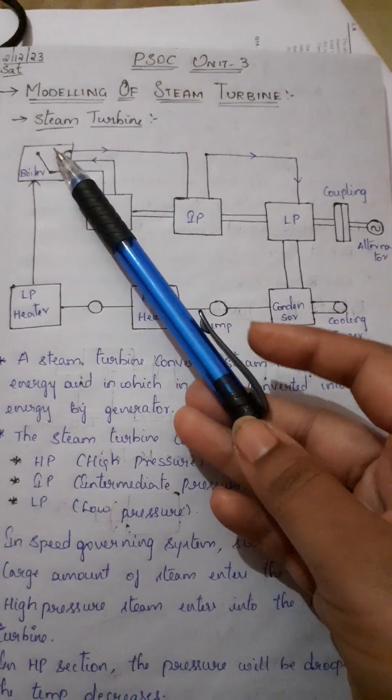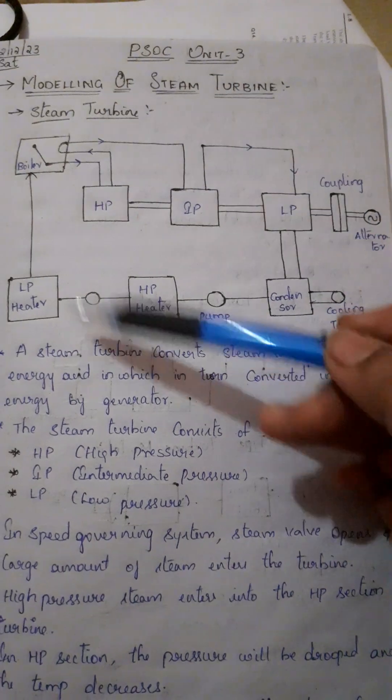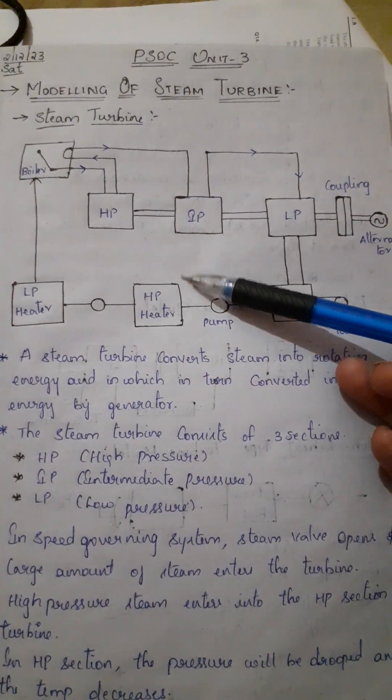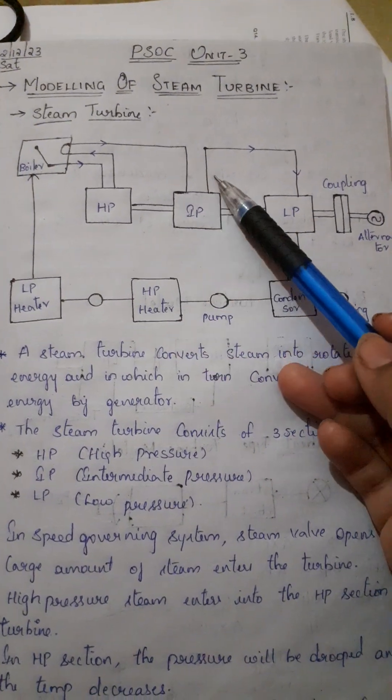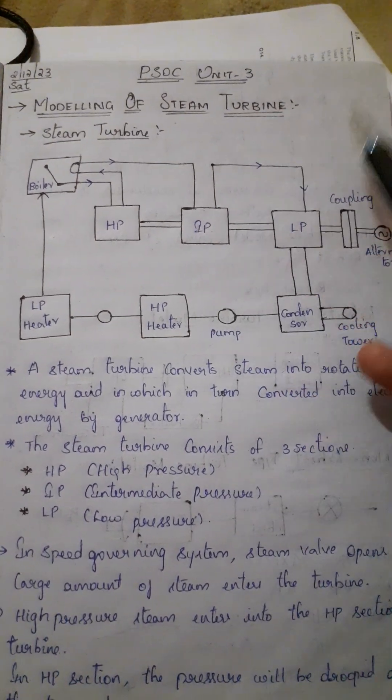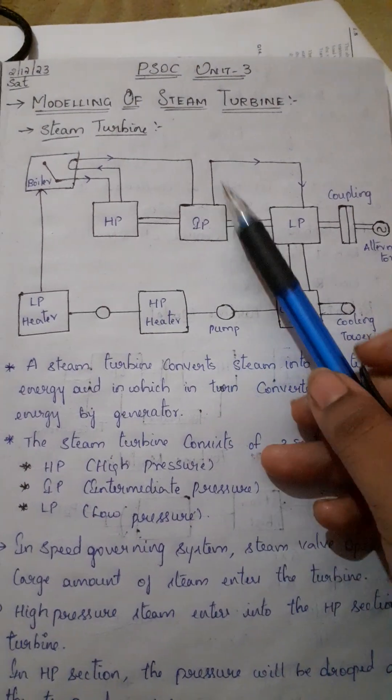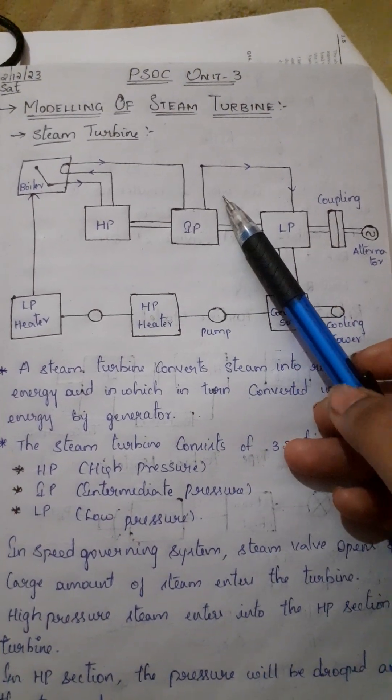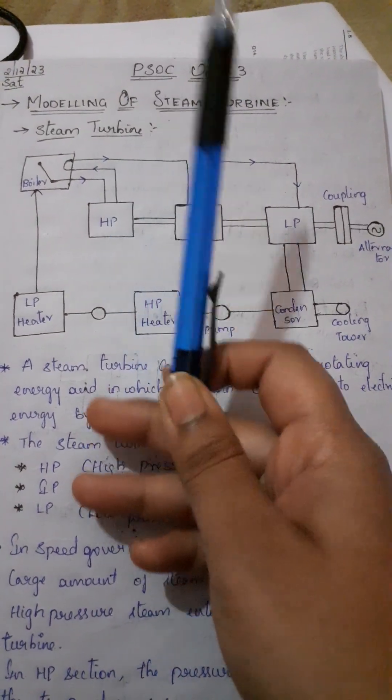I have the modeling of steam turbine. I will simply mention this diagram and those two types, reheat and non-reheat type. That's enough. Finally, I have the Tkg by 1 plus sT tau block diagram. This is the concept about modeling of steam turbine.